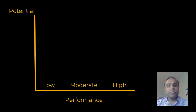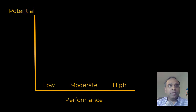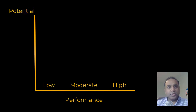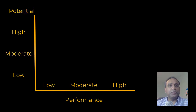Similarly, for potential, the people manager along with the leadership's guidance and HR will classify an employee based on their potential to contribute to the company or the team in the future. This can be in one of three categories like low, moderate, or high. The names may change from company to company — they may choose to rename the different categories — however, the concept remains the same.